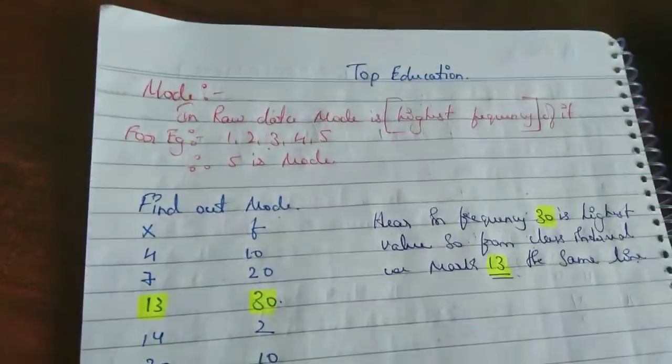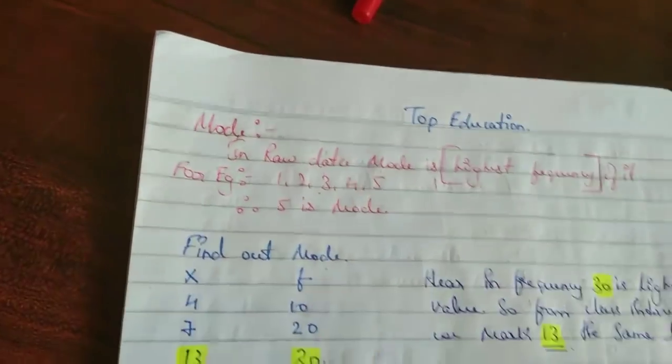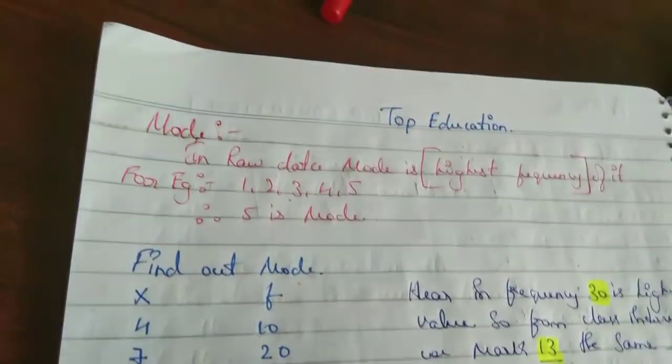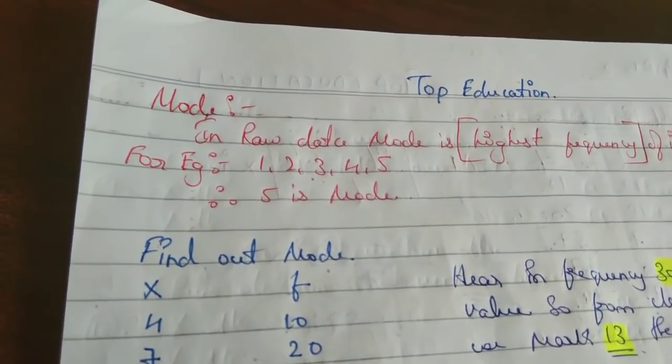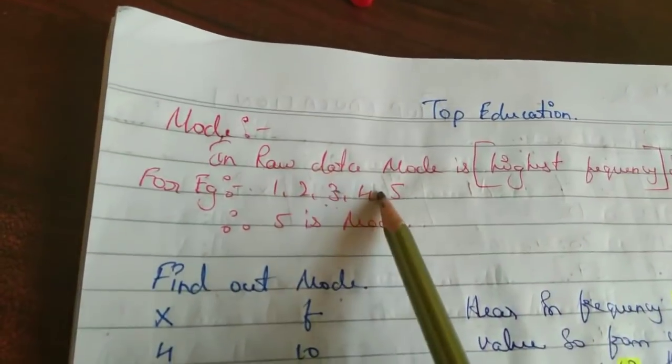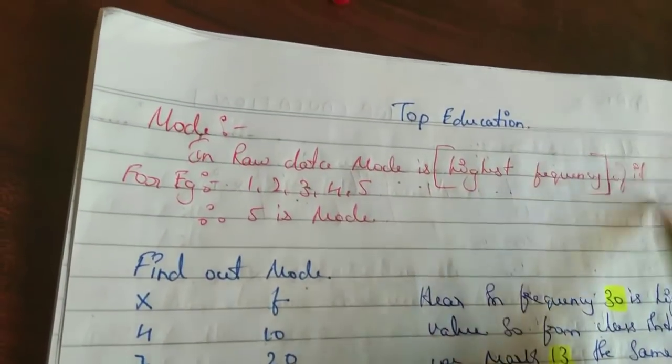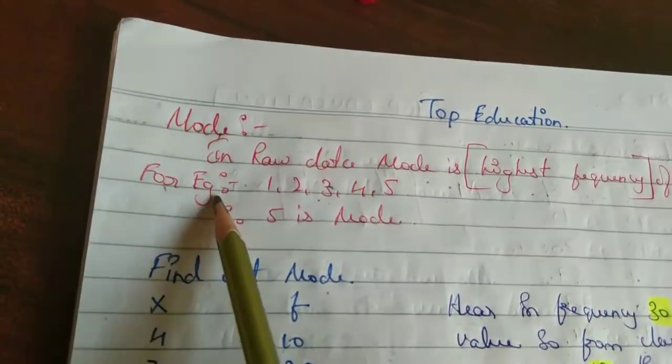Welcome to Top Education. In this session we will learn mode. Here, what happens in mode? There is no formula to find out when it is in raw data. Raw data mode is highest frequency of it.